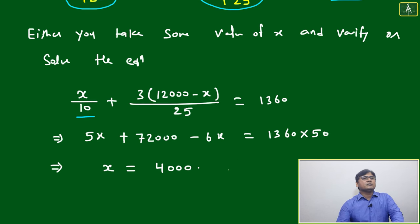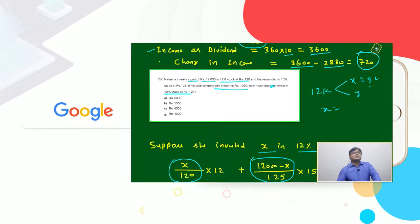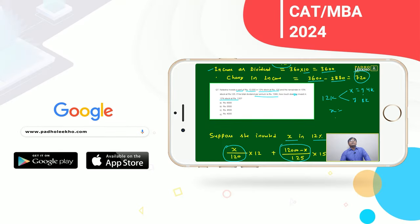X equals 4,000. This means you should invest 4k in the first stock and 8k in the second. Then combined, she will get the total dividend of 1,360.